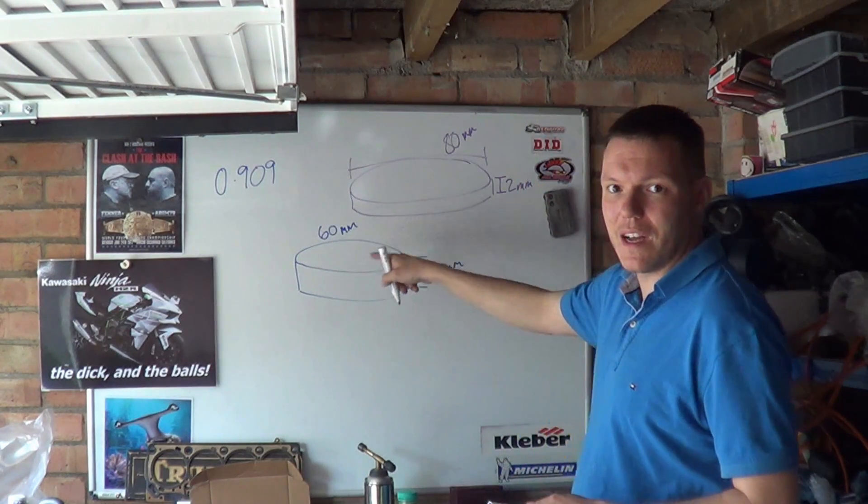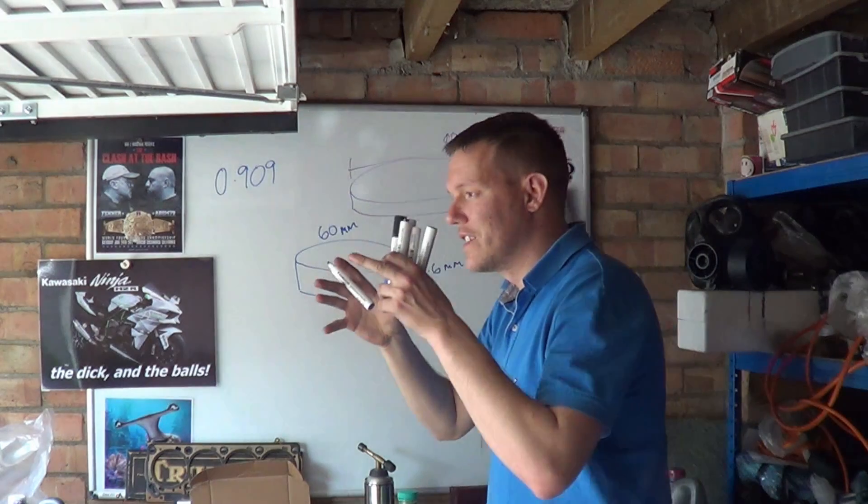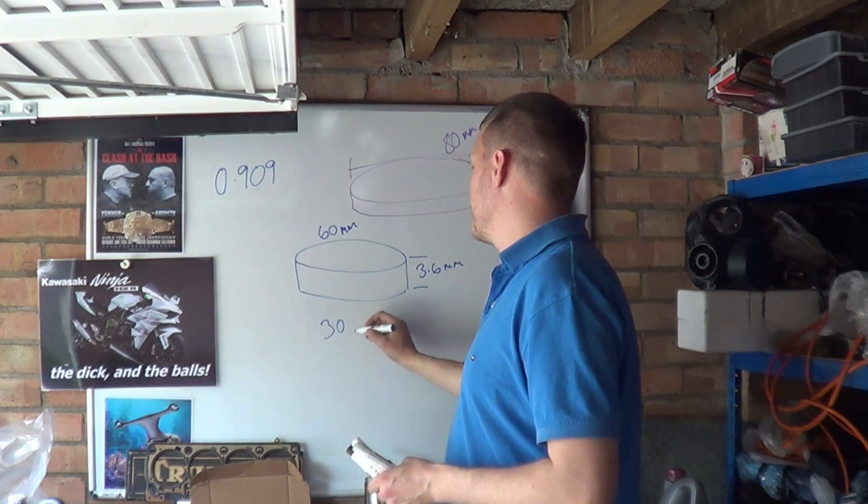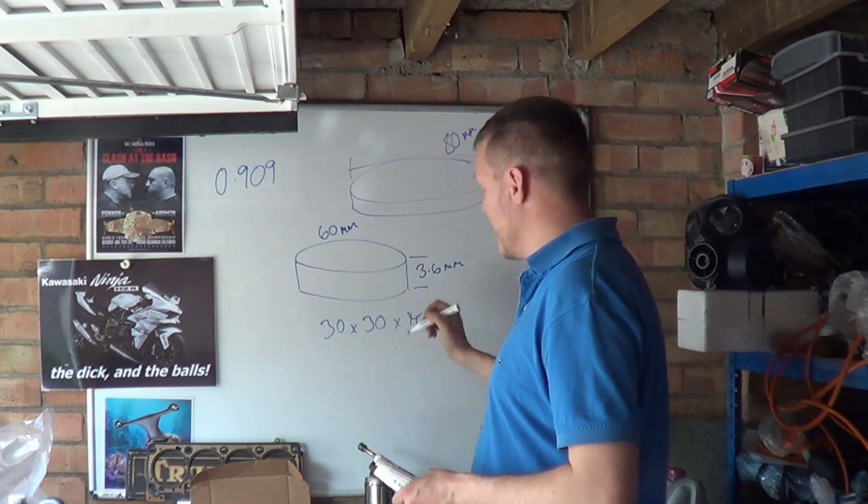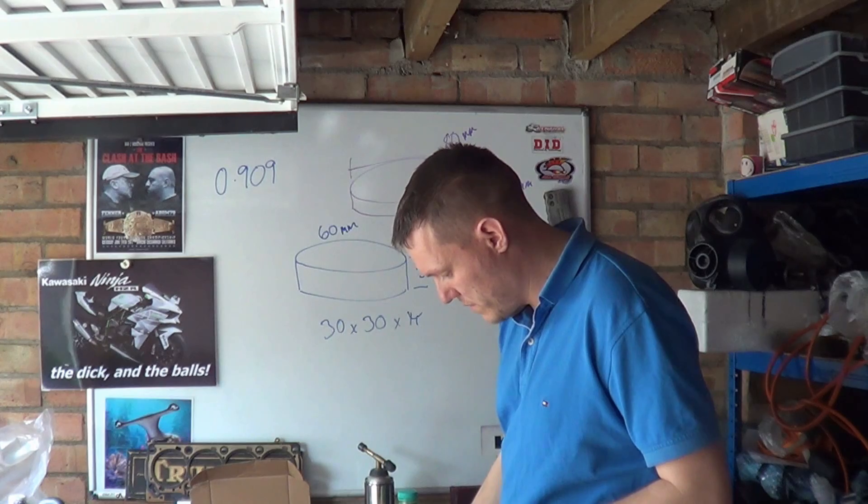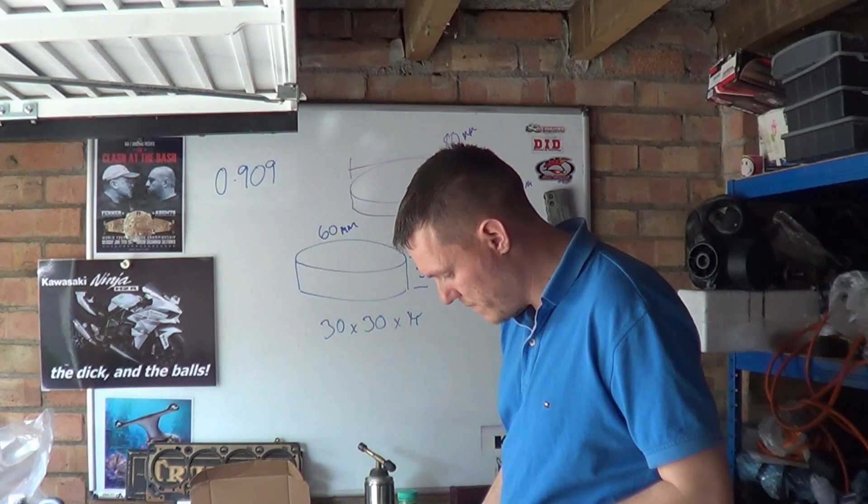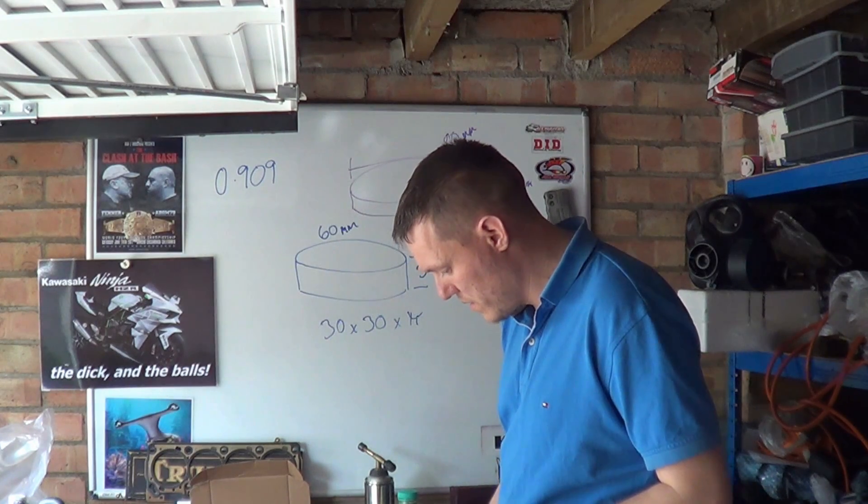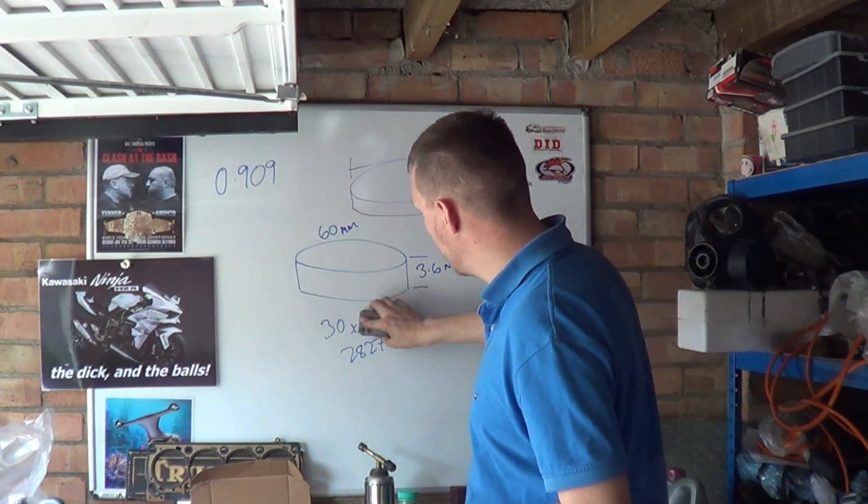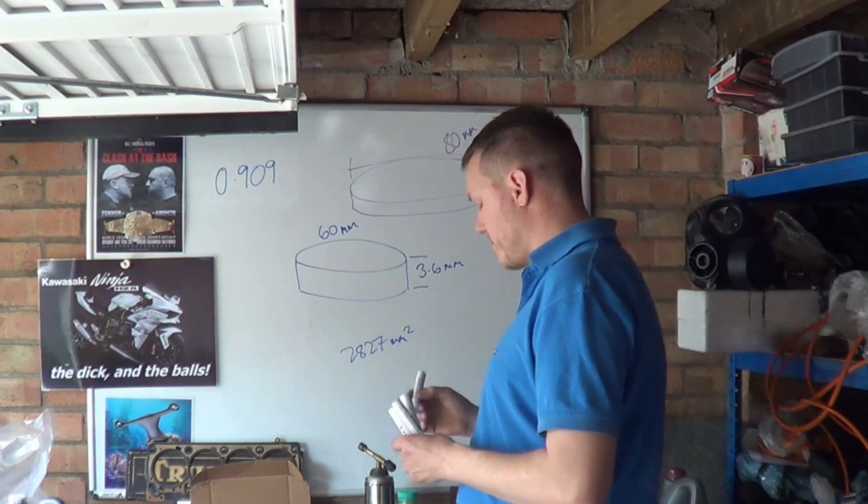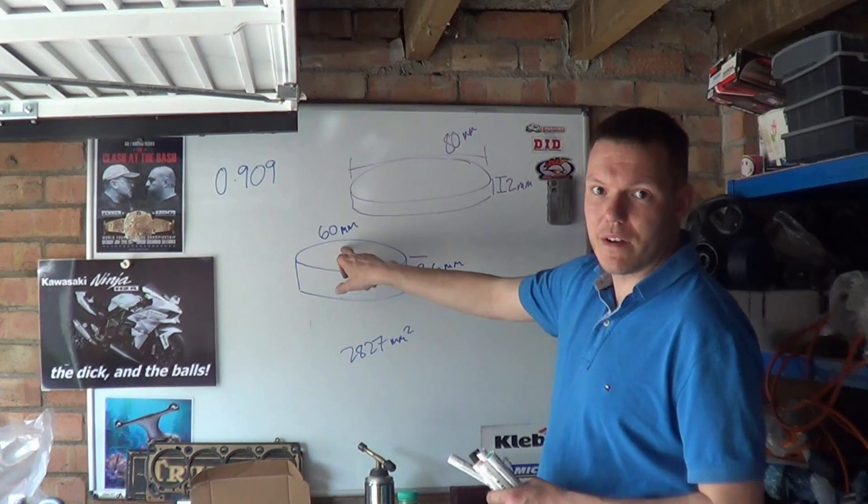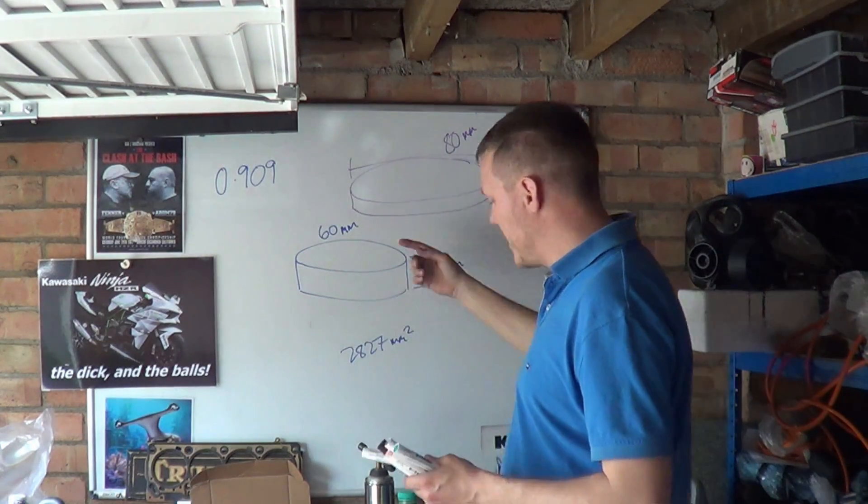We want to find the relationship between the piston diameter and the surface area of the rest of the cylinder. To do that, we do 30 squared times pi, which is 30 times 30 times 3.142, which equals 2827 millimeters squared. That's the piston area or the cylinder head area.